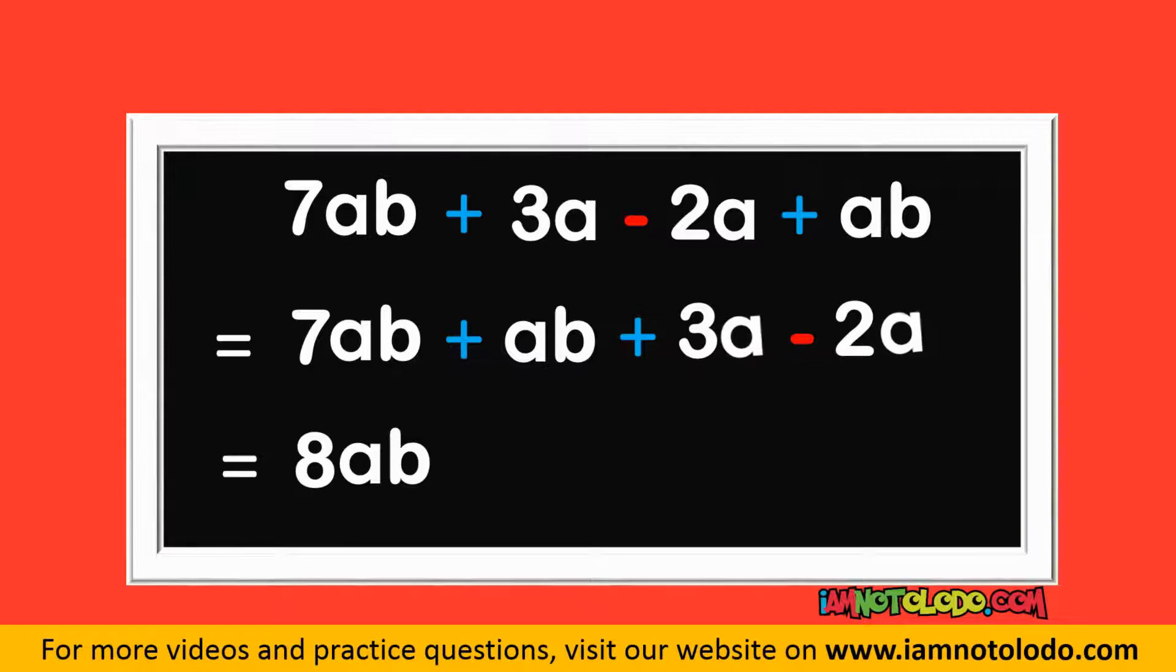Then these ones, they have the same alphabet, right? This is just 3 minus 2. 3 minus 2 is 1. So we can write plus 1A or just write your alphabet. In algebra, we don't write 1, we just write the alphabet. So this is our final answer: 8AB plus A. We can't add these because they do not have the same alphabet.